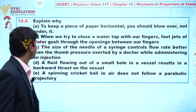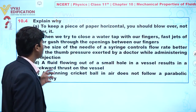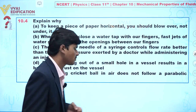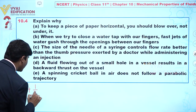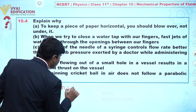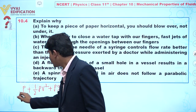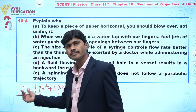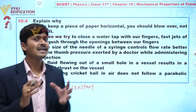For part (c): the size of the needle of a syringe controls the flow rate better than the thumb pressure exerted by a doctor. Using Bernoulli's principle: p + ½ρv² + ρgh = constant. Here, pressure and kinetic energy per unit volume — both are contributing to the total energy.